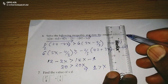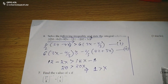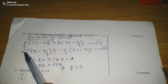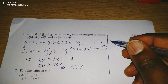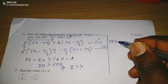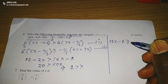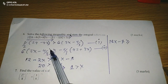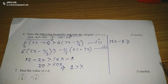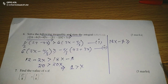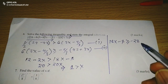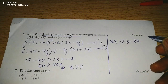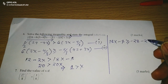Moving to the next inequality, we also open the brackets. This gives us 18x minus 8, greater than or equal to. Opening the right side: negative 2 thirds multiplied by 42 gives us negative 28, and negative 2 thirds multiplied by 3x gives negative 2x. So we have 18x minus 8, greater than or equal to negative 28 minus 2x.